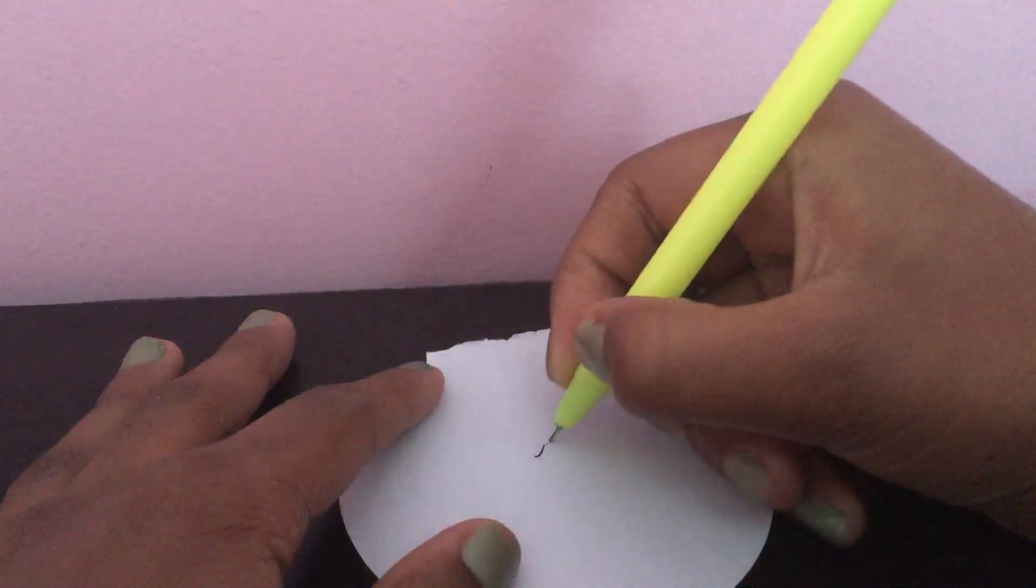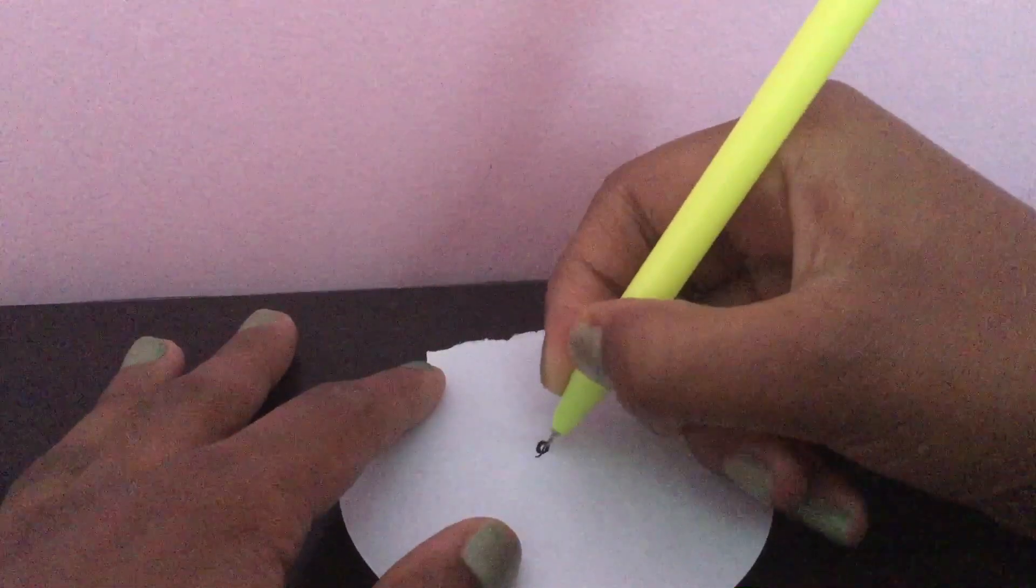Today we're gonna make designs on this mini little sheet. So first you always draw in the middle and make a circle.